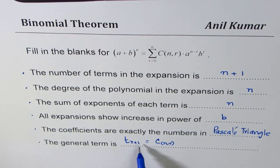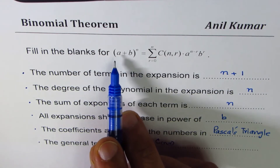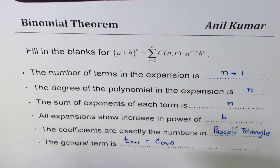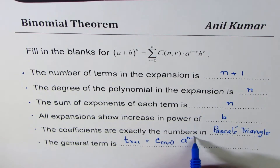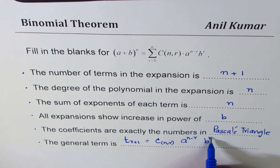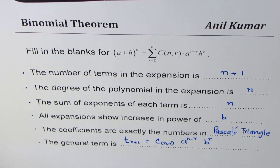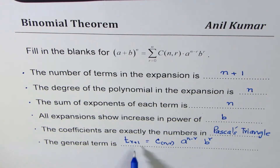For (a + b) to the power of n, the general term is a to the power of n minus r and b to the power of r. That is the general term, and the term number is r plus 1. This is very important to understand.